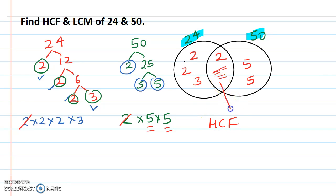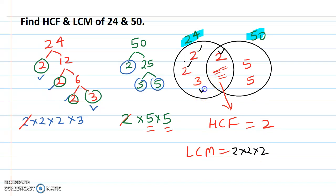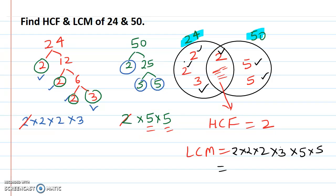Your HCF is this common part — there is only one number, 2. For LCM, multiply all the numbers: three 2s from 24's leftover, then 1 three, then the common 2, then two 5s from 50. So: 2 times 2 is 4, times 2 is 8, times 3 is 24, and 24 times 25 is 600. So your LCM is 600. Nice and easy.